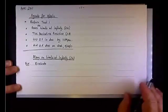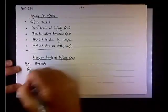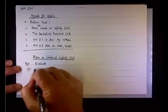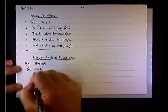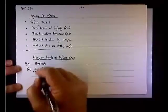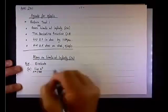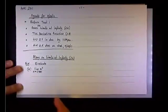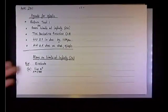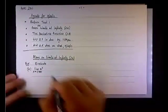I broke it down into four parts. The first one: we look at the limit of e to the x as x goes to infinity. Let's do plus or minus infinity, having in mind that there may be a difference between positive infinity and negative infinity.